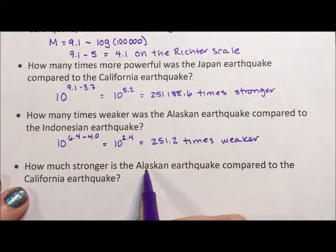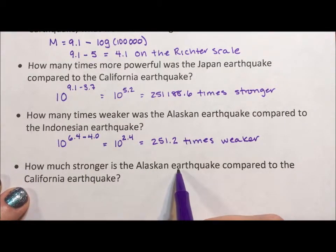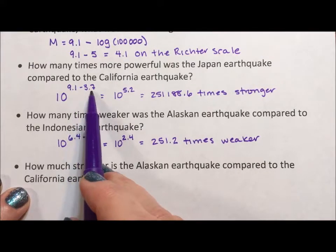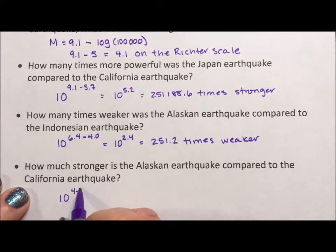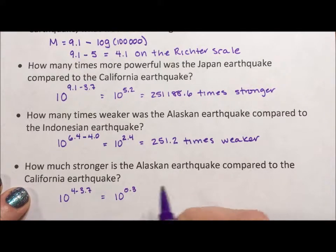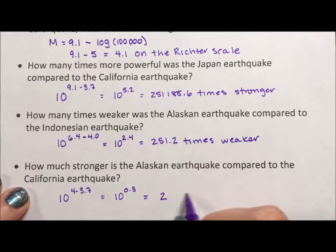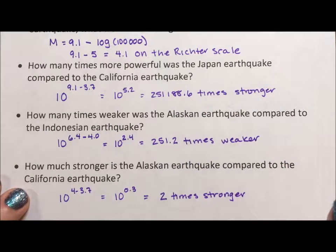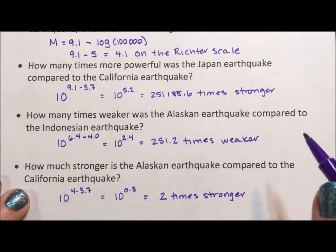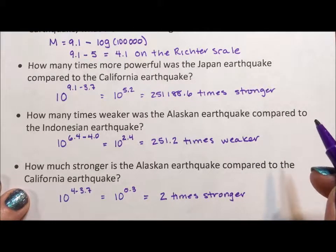Last, how much stronger is the Alaskan earthquake compared to the California earthquake? California was 3.7 and the Alaskan is 4.0. We have 10 to the 4 minus 3.7, which is 10 to the 0.3, giving us a grand total of 2 times stronger. From a mathematical point, when we're talking about these really huge numbers, 2 doesn't seem like a lot — but feeling the earthquakes, you can tell when one is stronger than the other.